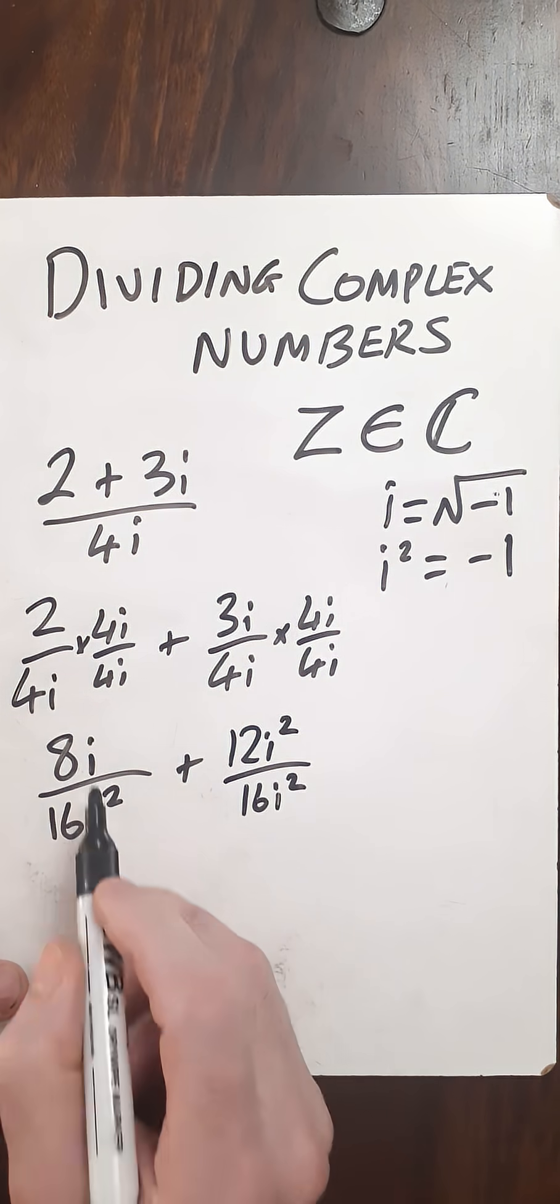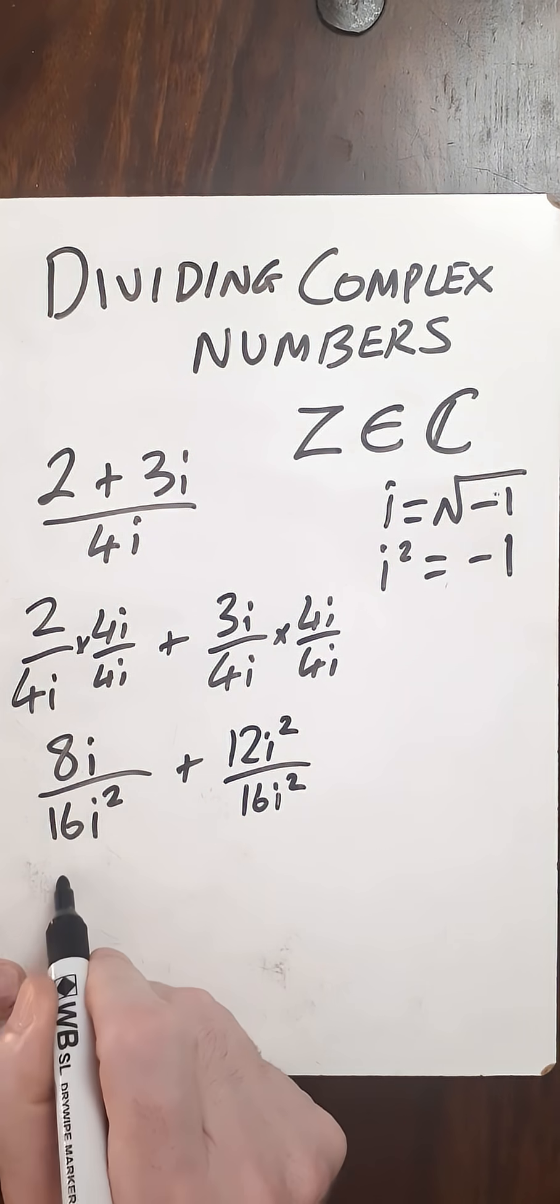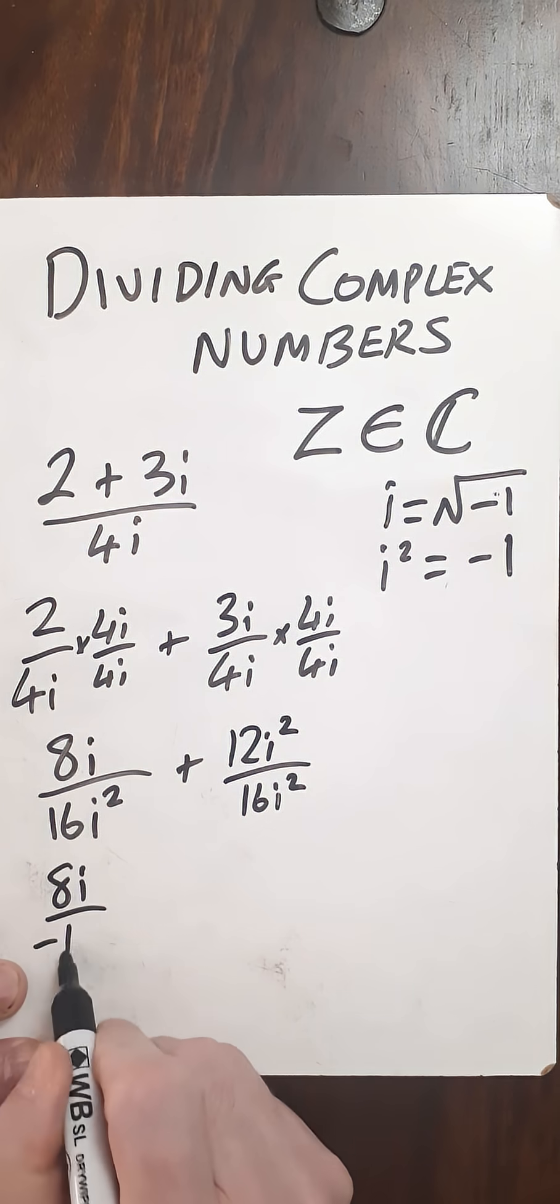So now 8i over 16i squared, 16i squared. i squared is minus 1, so that becomes 8i over minus 16.